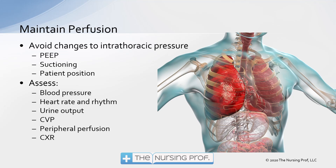Maintaining perfusion is essential — keep in mind that we can't affect the lungs without affecting the heart, as they share the same cavity. Intrathoracic pressure changes come from PEEP, from suctioning, and from patient positioning. Assess the patient's hemodynamics: assess for changes in blood pressure, remembering that systolic pressure reflects cardiac output, and monitor heart rate and rhythm. Also assess urine output, CVP, peripheral perfusion, and chest X-ray for changes occurring as a result of intrathoracic pressure alterations.